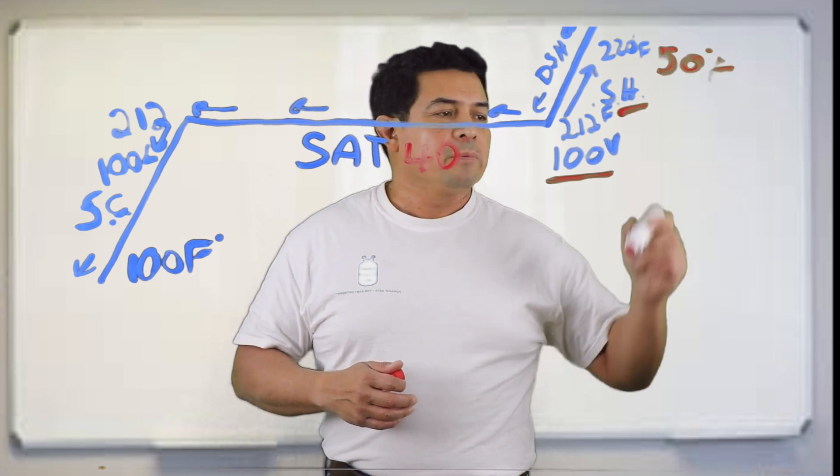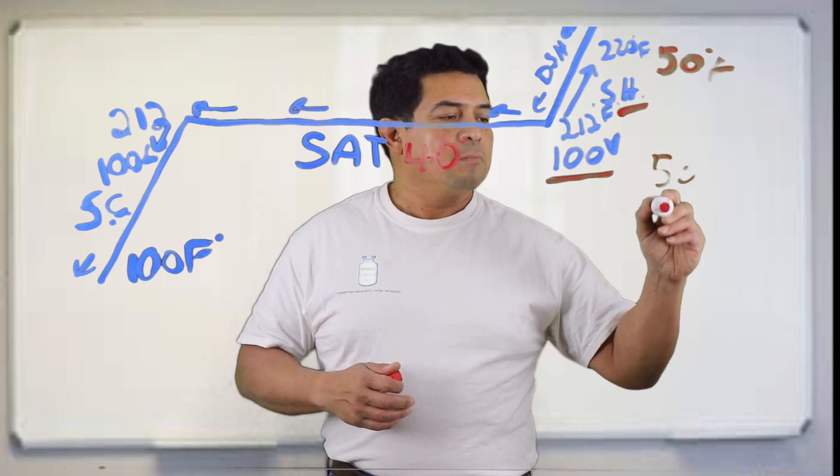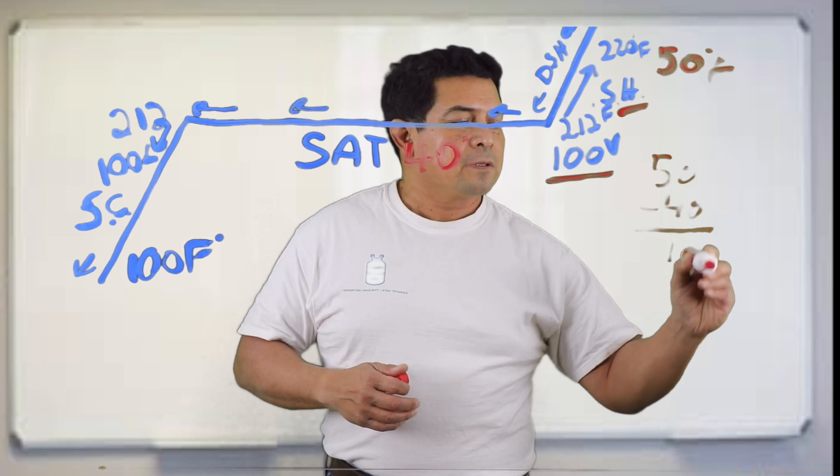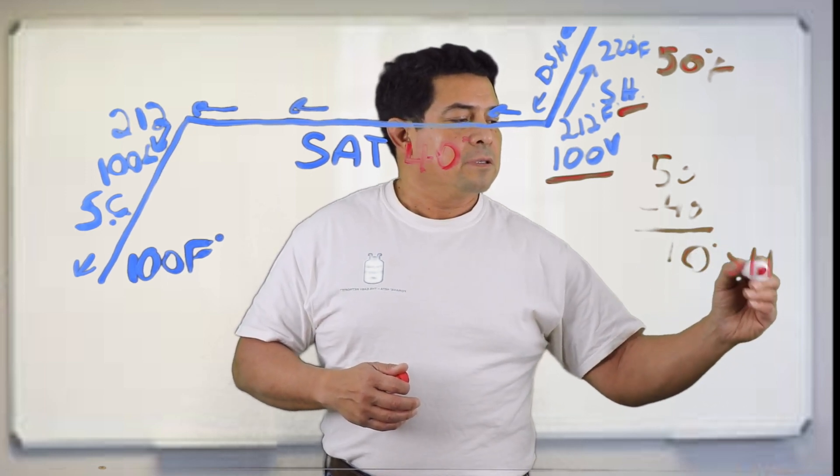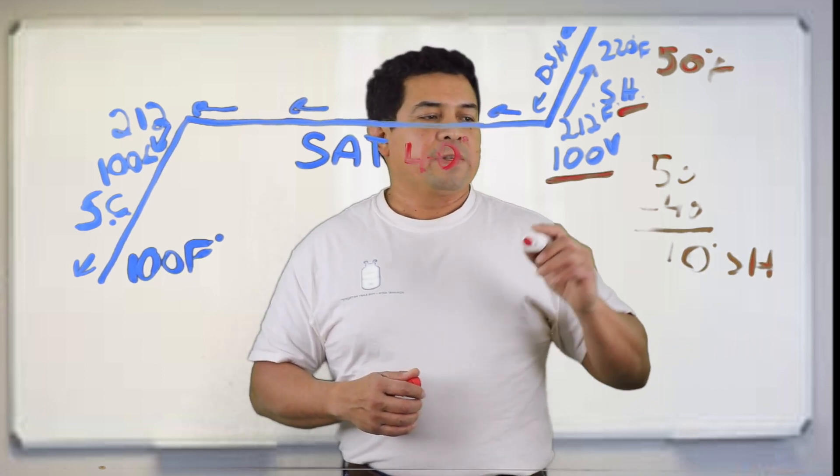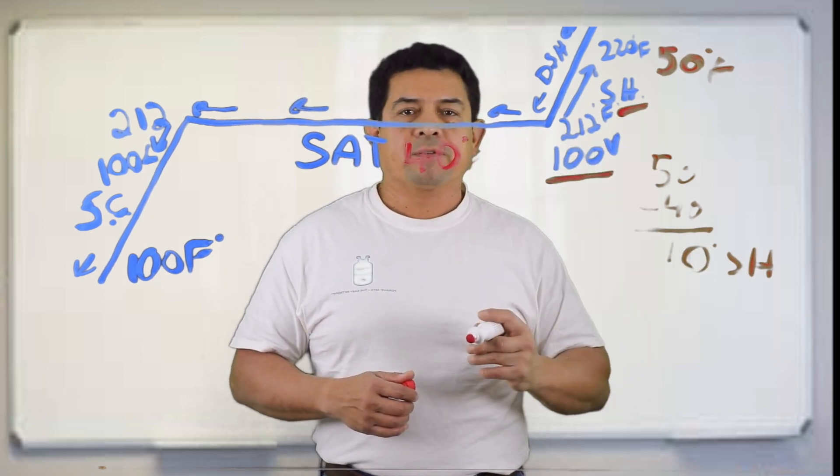So when we do the math, we can see that we have 50 minus the 40. That gives us 10, 10 degrees of superheat. This is where we come up with 10 degrees of superheat.